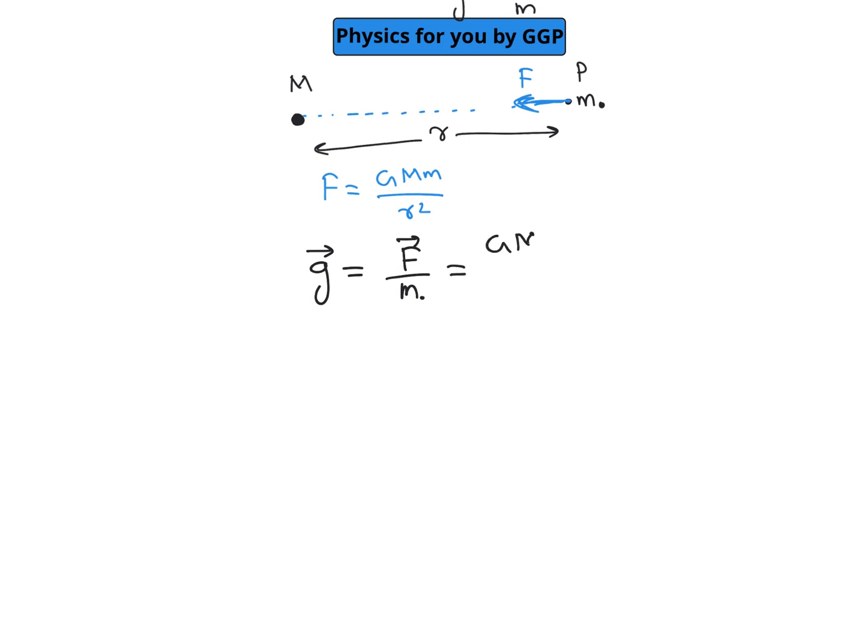So we can write this will be equal to GM divided by R square. We can use this equation GM by R square as the value of gravitational field which is produced by an object of mass M at a distance R.